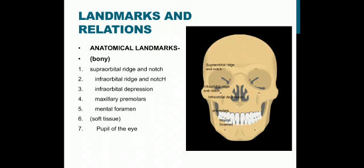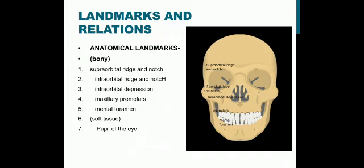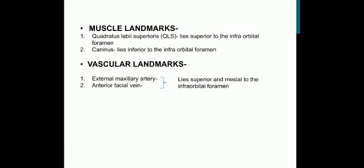The anatomical landmarks include bony landmarks and soft tissue landmarks. The bony landmarks are the supraorbital ridge and notch, infraorbital ridge and notch, infraorbital depression, maxillary premolars, and the mental foramen. The soft tissue landmark includes the pupil of the eye. The muscle landmarks include the quadratus labii superioris muscle, which lies superior to the infraorbital foramen, and the caninus muscle, which lies inferior to the infraorbital foramen.